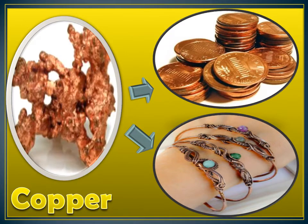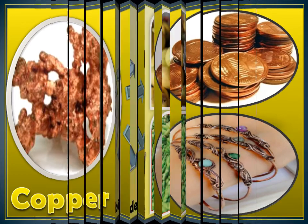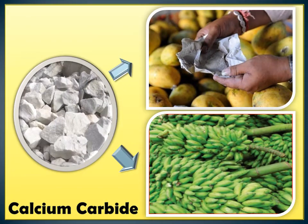Another is copper. This is common in our place because we call it gambang. This is usually used in making currencies and at the same time in creating jewelries. We also have calcium carbide, also known as calboro in our term.